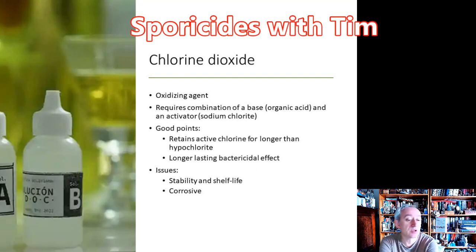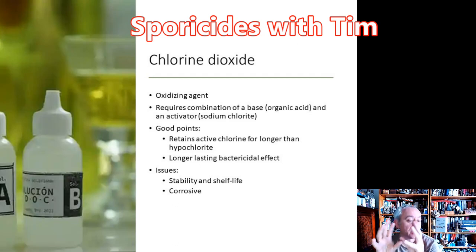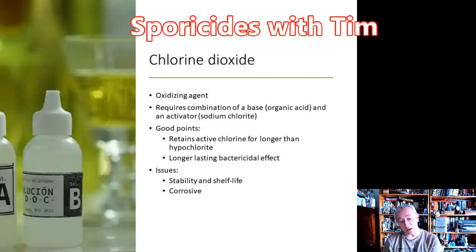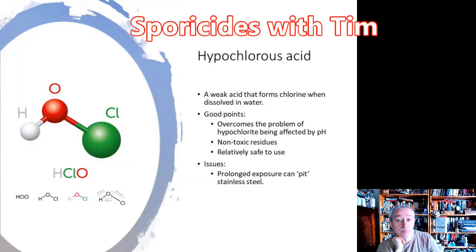Some common sporicides on the market include chlorine dioxide, which is an oxidizing agent. When it gets into a bacterial cell, it causes an oxidative reaction that disrupts all the cellular machinery inside the cell. It comes as a two-part material — an acid base and then something to activate it. An example of a commercial product is Bispor. The limitations of chlorine dioxide are that the chlorine activity only lasts about four hours, and it is very corrosive — when applied to stainless steel, it requires a water rinse fairly quickly to prevent rusting.